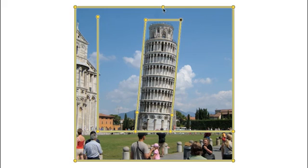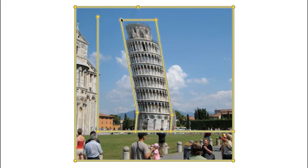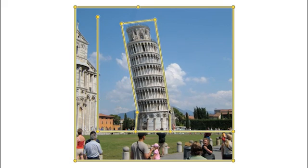Cages may be placed inside the shape and combined with skeletons and points. Here, a hybrid cage is used to push the leaning tower of Pisa in the other direction.